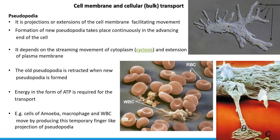Formation of new pseudopodium takes place continuously at the advancing end — that is the end at which the cell is moving. The pseudopodial formation also depends upon the streaming movement of the cytoplasm, technically referred to as cyclosis, which is a process that takes place only in eukaryotic organisms. Cyclosis and pseudopodial-mediated extensions of the plasma membrane help in the further movement of the cell.